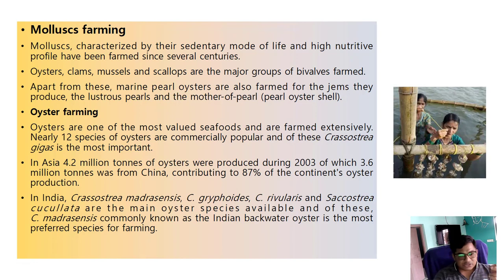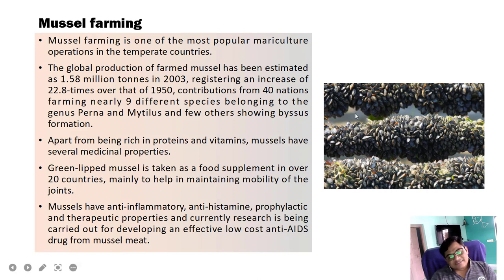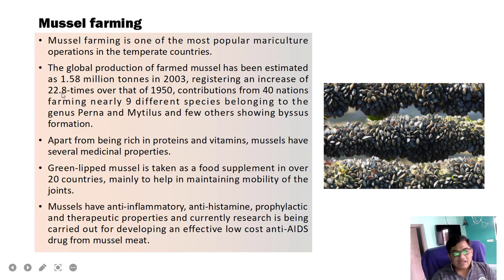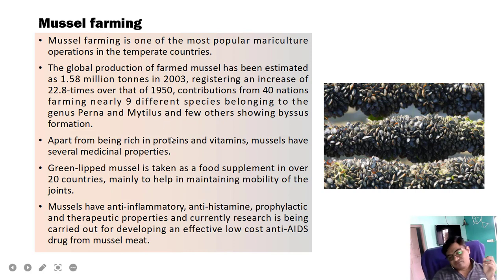China is the major country producing oysters. In India, Crassostrea madrasensis, Saccostrea cucullata, and Crassostrea gryphoides are the main oyster species available. Of these, Crassostrea madrasensis, commonly known as the Indian backwater oyster, is the most preferred species for farming in our country. Mussel farming is one of the most important mariculture operations in temperate countries. The global production of farmed mussels was estimated at 1.58 million tons in 2003, registering an increase of 22.8 times over that of 1950.